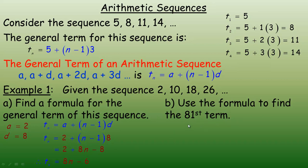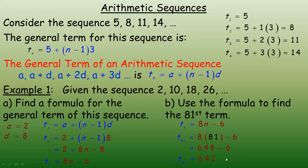Part b says to use the formula to find the 81st term. Since 81 is the term number n, we fill in 81: term 81 equals 8 times 81 minus 6. 8 times 81 is 648, take away 6, so the 81st term is 642. Notice the common difference is 8 and the coefficient of n is also 8 — that's not a coincidence. If the sequence is going up by 8, then it should be 8n.